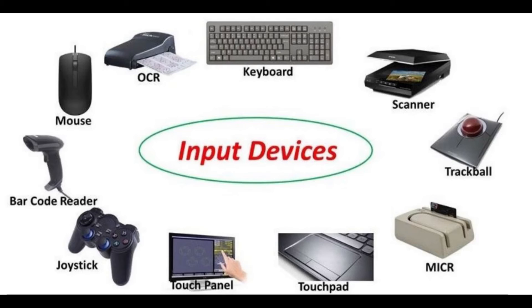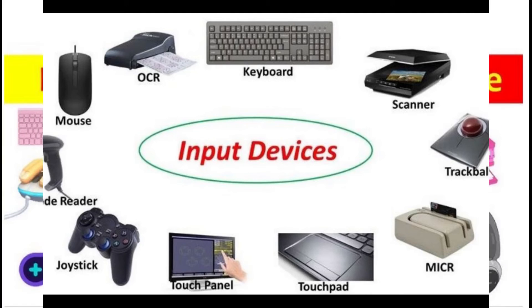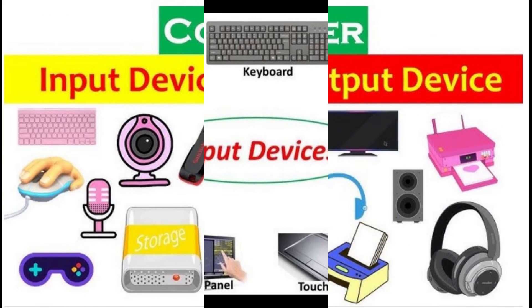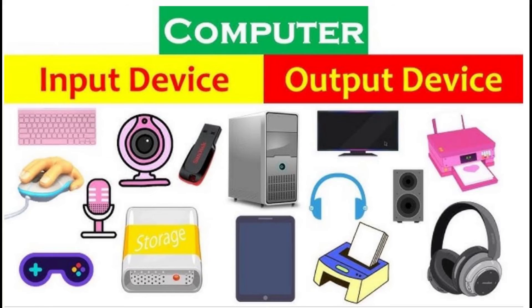Some of the important output devices used in a computer: Monitors, Graphic Plotter, Printer. Monitors, commonly called as Visual Display Unit (VDU), are the main output device of a computer. It forms images from tiny dots, called pixels that are arranged in a rectangular form. The sharpness of the image depends upon the number of pixels. There are two kinds of viewing screen used for monitors.